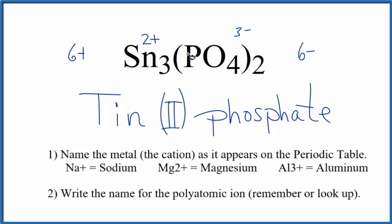So the name for Sn₃(PO₄)₂ is tin(II) phosphate. And this two here in Roman numerals reflects the charge on each one of these three tin atoms. This is Dr. B with the name for Sn₃(PO₄)₂. Thanks for watching.